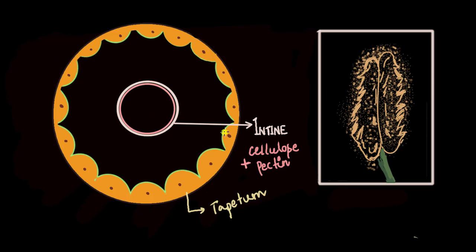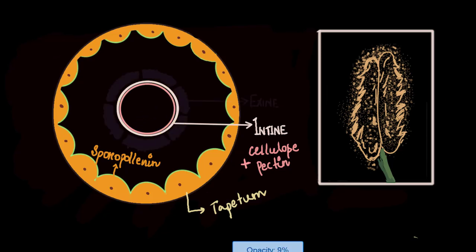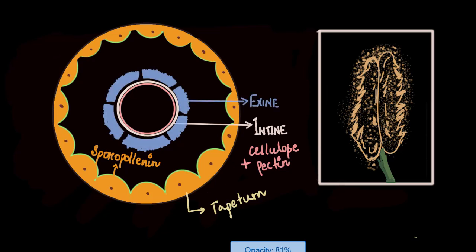Now this tapetum layer, which provides nourishment to the growing cells inside, thinks that this intine layer is not sufficient for the microspores. So this tapetum layer now secretes a substance called sporopollenin. This sporopollenin aggregates around this microspore producing another layer which we call exine. So this exine is secreted by the tapetum layer.